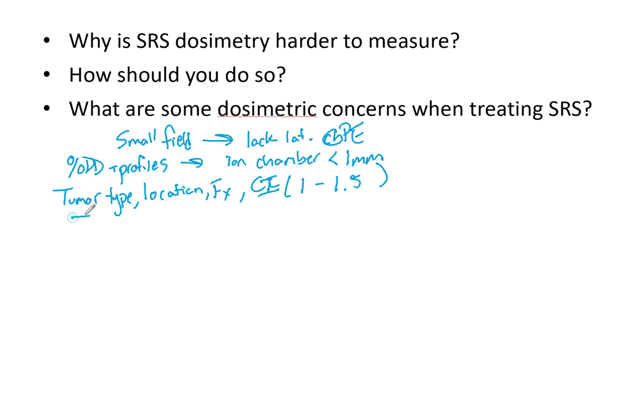You'll want to reference TG-101 for SBRT and TG-42 for SRS QA. Additional concerns include intermediate and low dose spilling — because using multiple arc and field angles to treat these tumors means low dose may spread throughout portions of the brain. Many physicians also look closely at normal brain dose, and there are protocols and task groups that specify what normal brain dose should be.